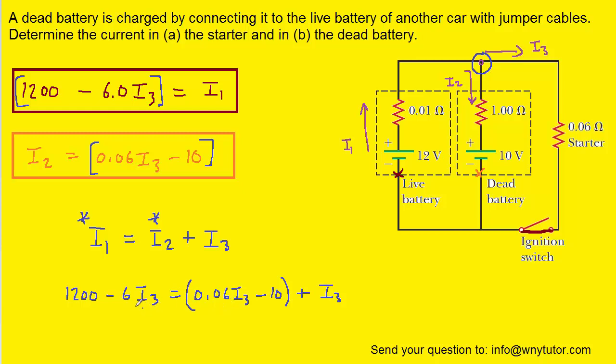And to do that, we can add the 6 I3 over to the right and then add the 10 over to the left. And then we'll divide both sides by 7.06. And when we do that, we get approximately 170 amps for I3.